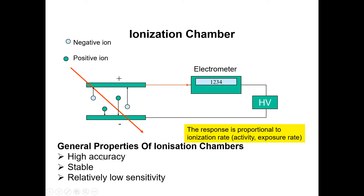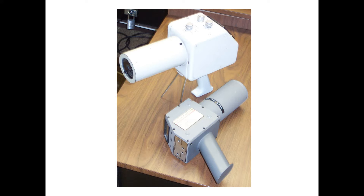Here are some general properties of the ionization chamber. This kind of radiation sensor has high accuracy; the measurements it provides are highly accurate. It is also stable. One drawback is that it has relatively low sensitivity.